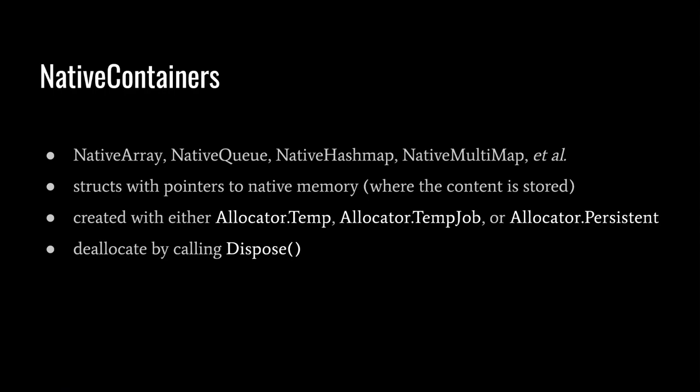Unity provides native container types — including NativeArray and NativeHashMap — which get special allowance in jobs. A native container is a struct with a pointer to natively allocated memory where the content is stored. Because the garbage collector has no awareness of natively allocated memory, we must manually call Dispose when we no longer need it. When creating a native container, we specify an allocator: persistent (uses malloc, can be slow), temp (fastest, must be disposed in the same frame), or temp job (must be disposed within four frames). These allocation lifetime checks run in the editor but are disabled in standalone builds.